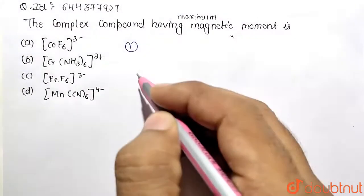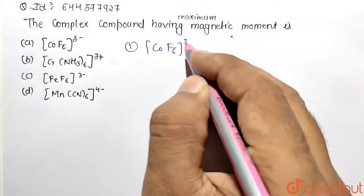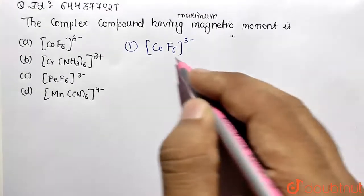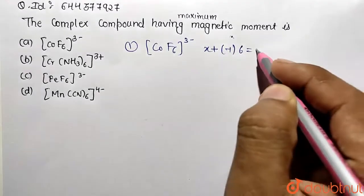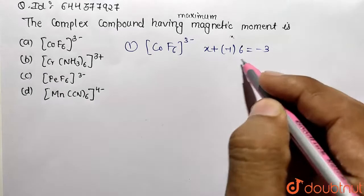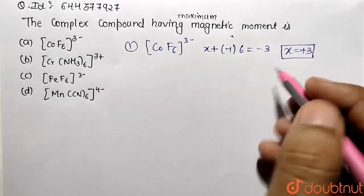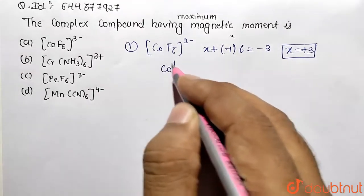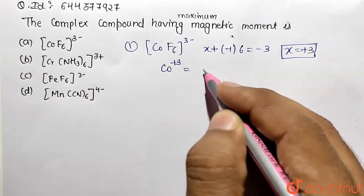For the first complex, we have [CoF6]³⁻. We put X, fluoro is a negative ligand, so -1 multiplied by 6. The overall charge is -3 on the coordination sphere. So the value turns out to be positive 3. This shows that cobalt is present in the third ionization state. What is the configuration for the third ionization state? It's going to be argon.